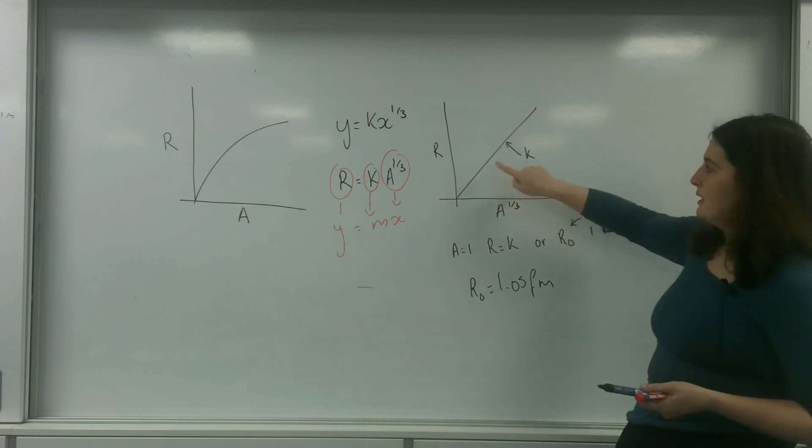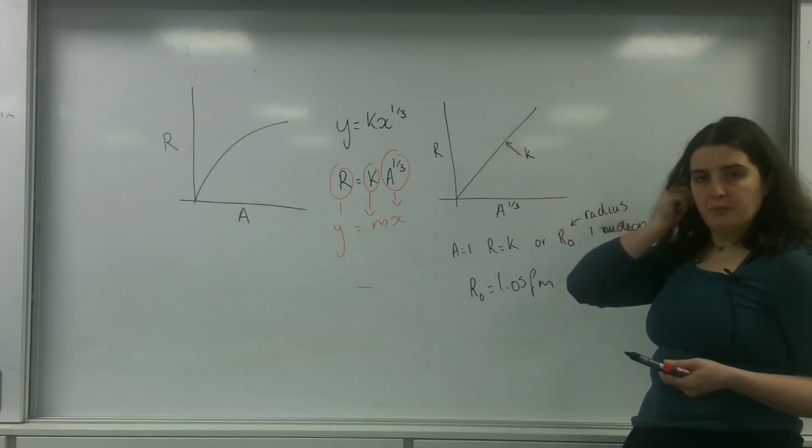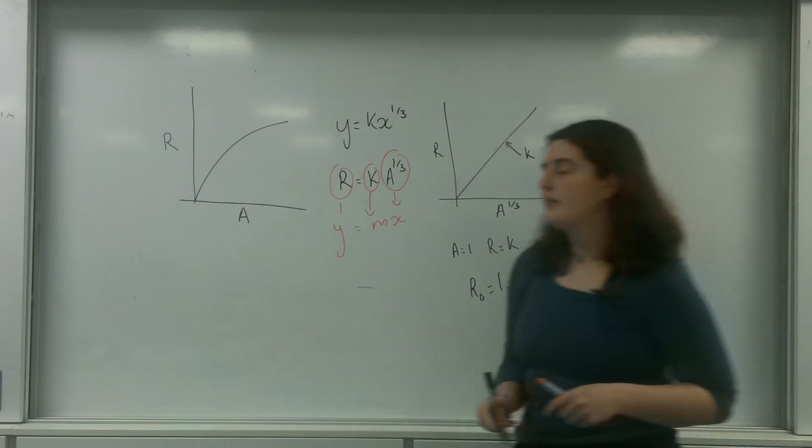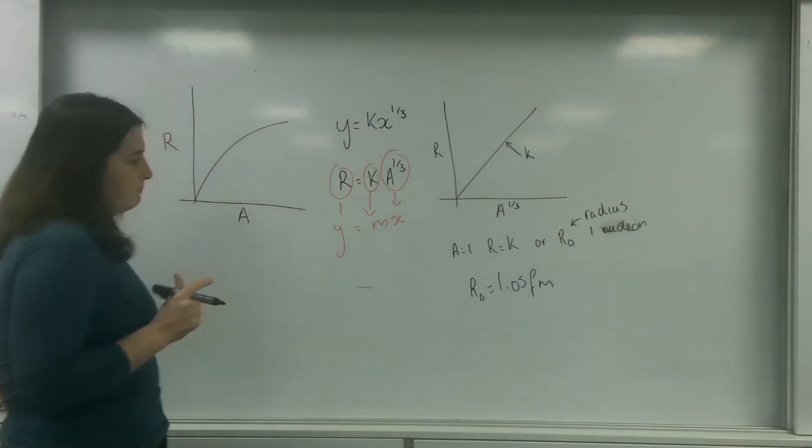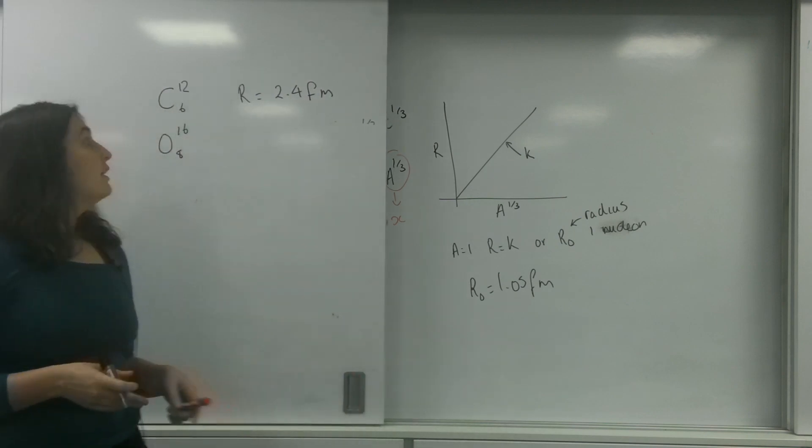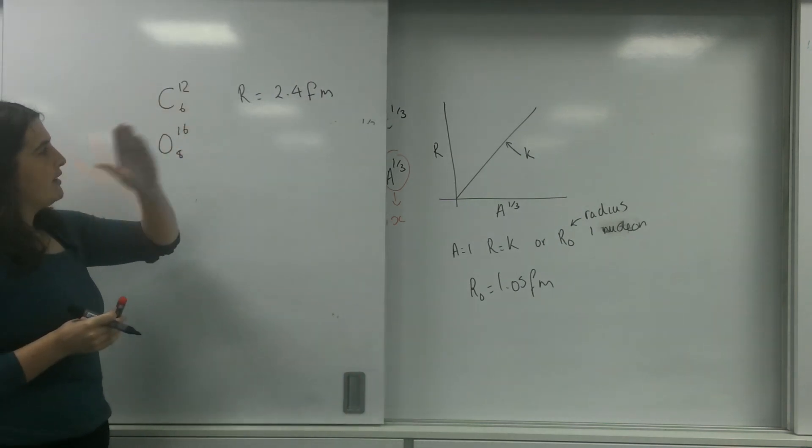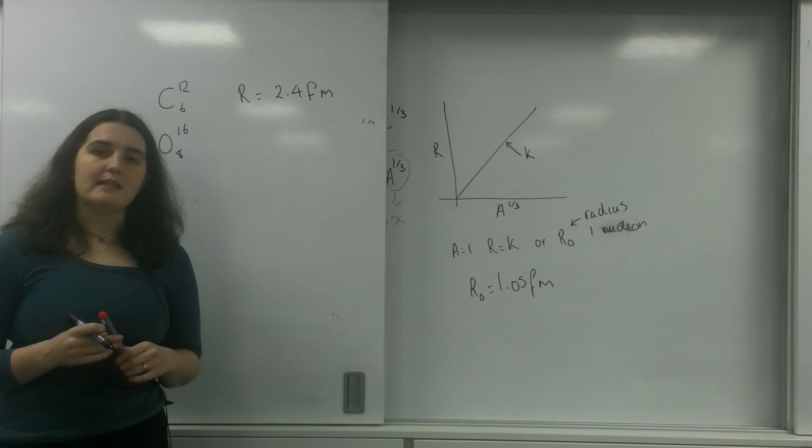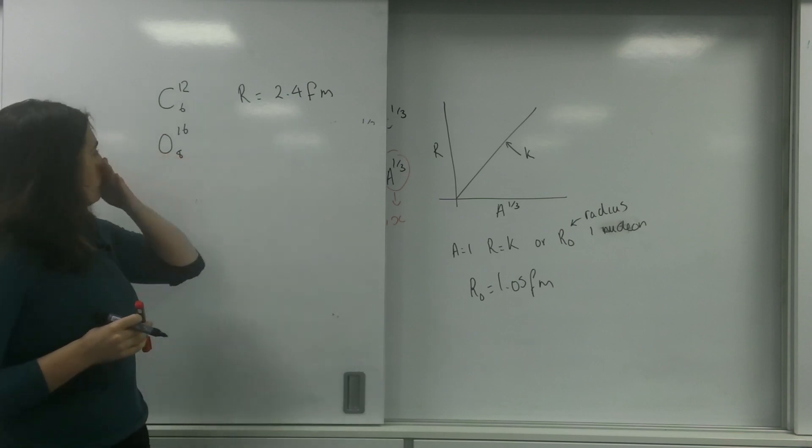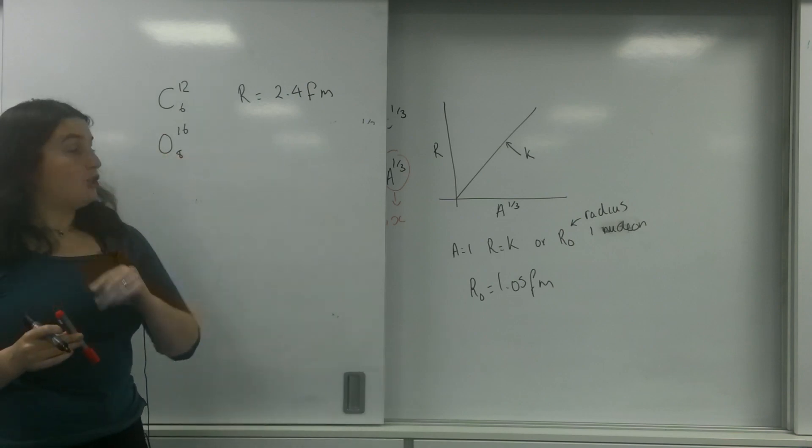So you may be asked to calculate from the gradient of the graph. You may be able to do a question that I'm just about to do now. So what I've got here is a question. I've told you that carbon-12 has a radius of 2.4 femtometers. Work out the radius of oxygen-16.